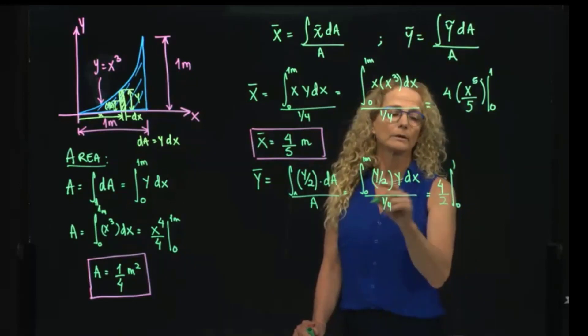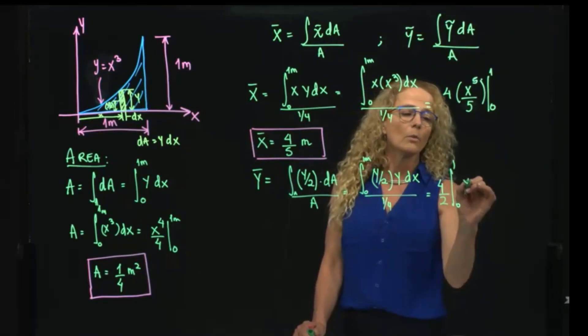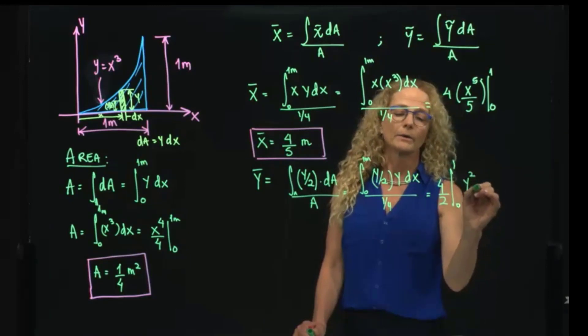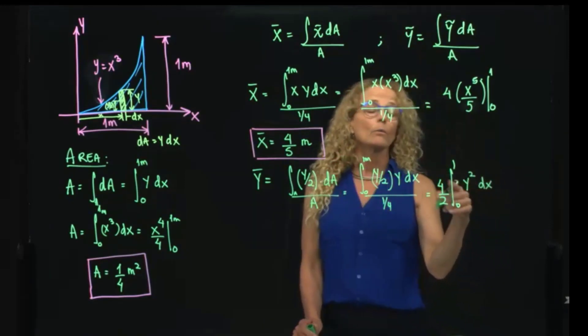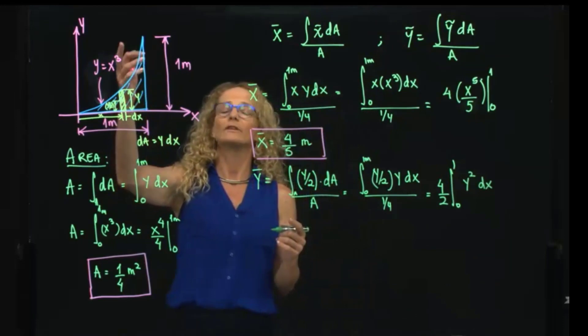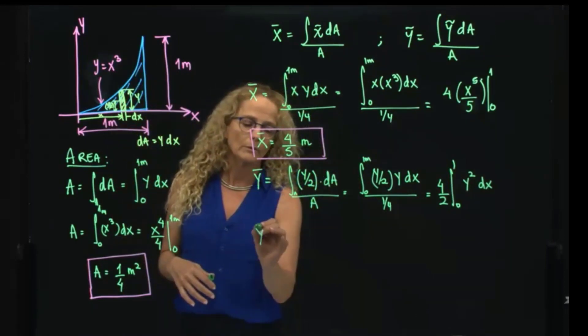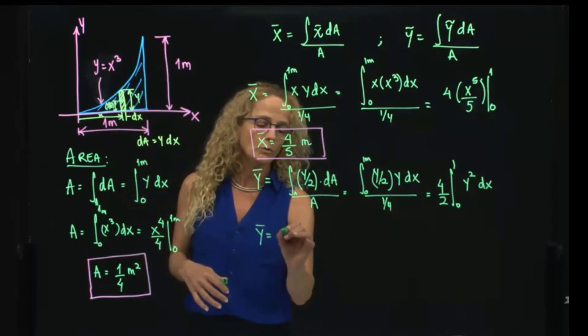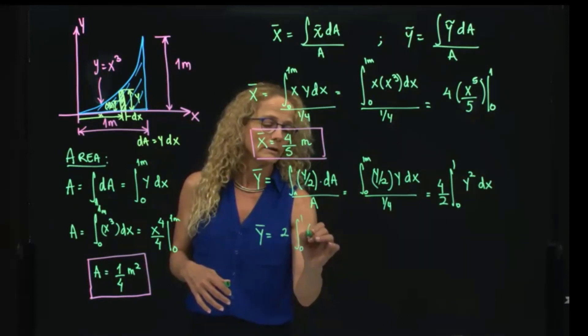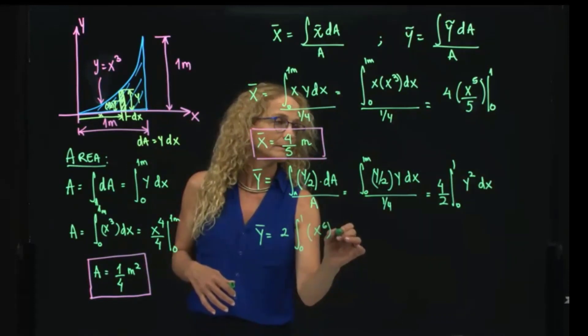I can take it out of the integral, y squared dx. And y squared will be x to the 6th. So that will equals then to 2 integral of 0 to 1, x to the 6th dx.